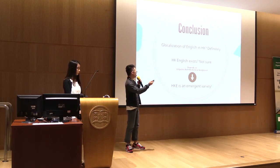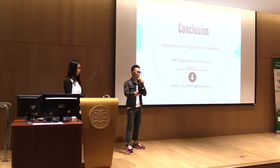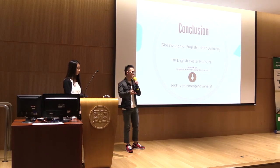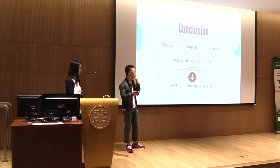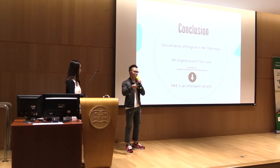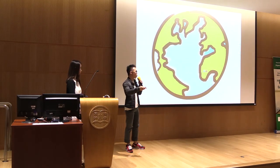To conclude, glocalization of English in Hong Kong definitely exists, evidenced by changes in vocabularies and grammar rules. However, if we say Hong Kong English exists as a language, we have some reservations, because it depends on two major factors: linguistic richness and social acceptance. It is important for a language to be accepted by its speakers. For now, it is safe to say Hong Kong English is an emergent variety — and maybe after years of evolution, we can arrive at a place where it is truly Hong Kong English.